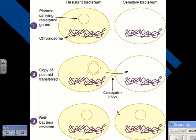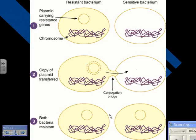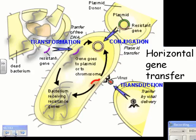Here's another way antibiotic resistance can spread. If you have a resistant bacterium with a plasmid — a little piece of DNA in addition to its chromosome — and a sensitive bacterium nearby, this is called conjugation. Some bacteria can form a little tube between them, copy the plasmid, and pass it to the other bacterium. It's sort of like bacterial sex — they don't have babies, but they do spread their DNA. Now you have two bacteria resistant to the antibiotic. That's how antibiotic resistance can spread through conjugation.